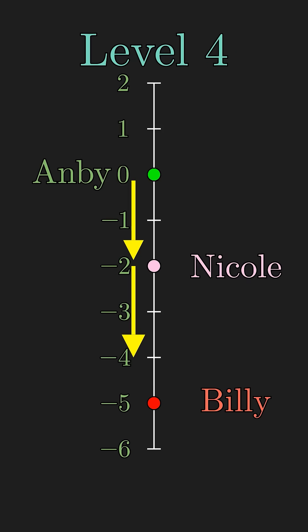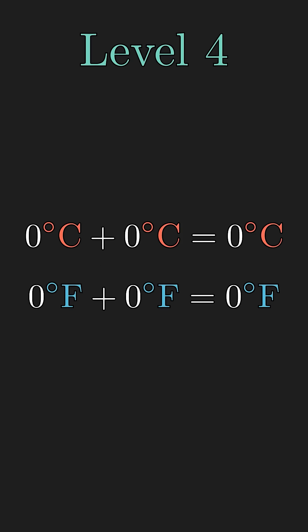But everyone would agree on what it means to double Nicole's displacement from Amby. So displacement from any position is a vector. So if we think of these common scales as temperature displacements, then we can just add them.